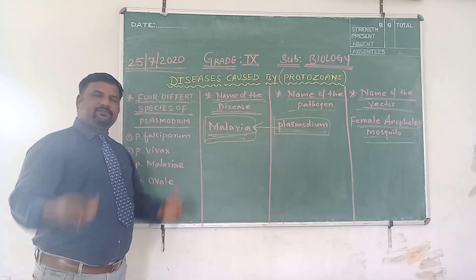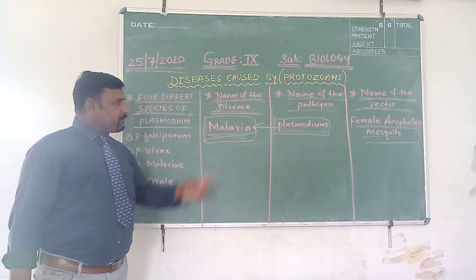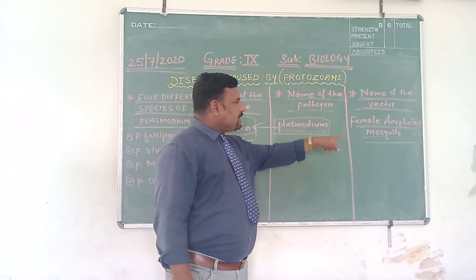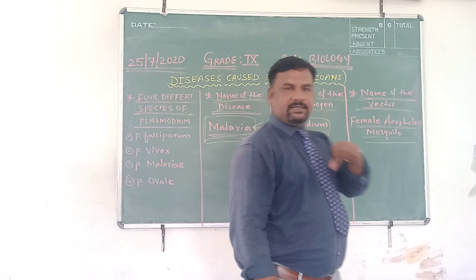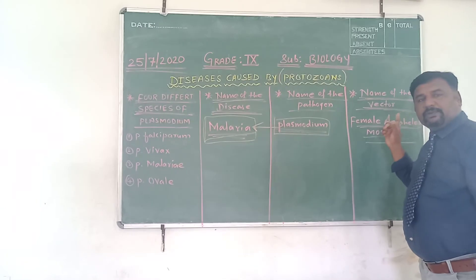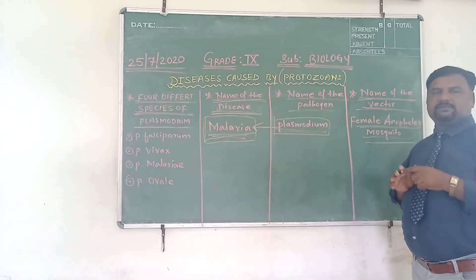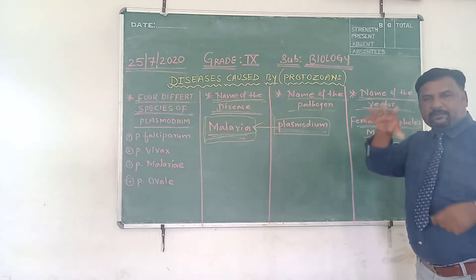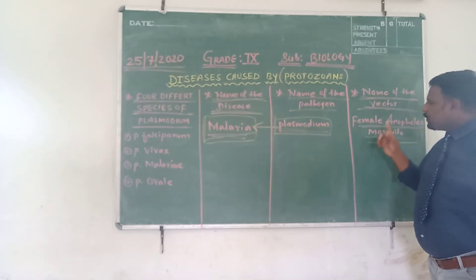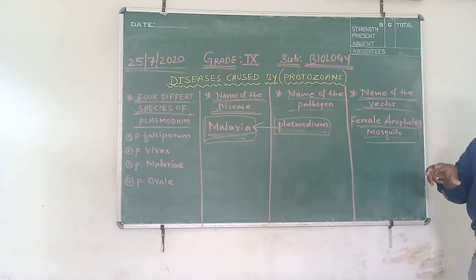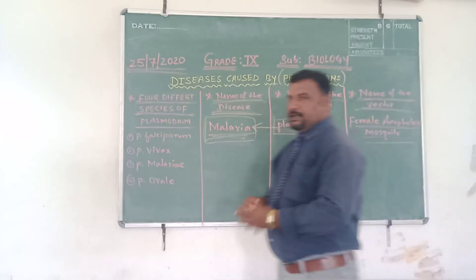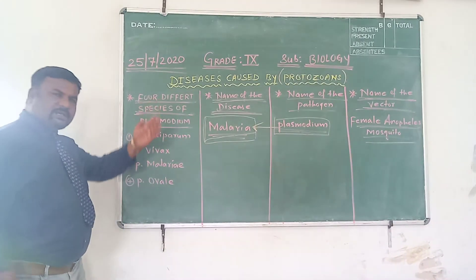The male Anopheles mosquito feeds on flowering plants — it visits and sucks nectar from them. That is the feeding habit of the male Anopheles mosquito. Whereas the female Anopheles mosquito acts as a vector for malaria because its feeding habit is to feed on human blood. Because the female Anopheles mosquito feeds on human blood, it is a vector for malaria.